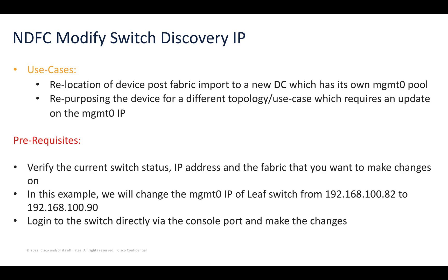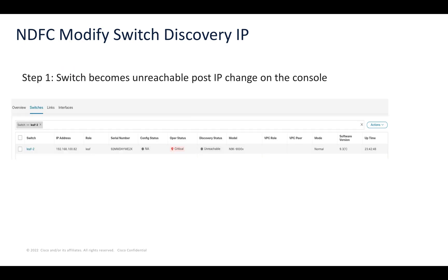What are the prerequisites? We recommend verification of the current switch status, the IP address, and the fabric that you want to make changes on. In this example, we're going to look at a leaf switch and change the IP address from 192.168.82 to 200.90.